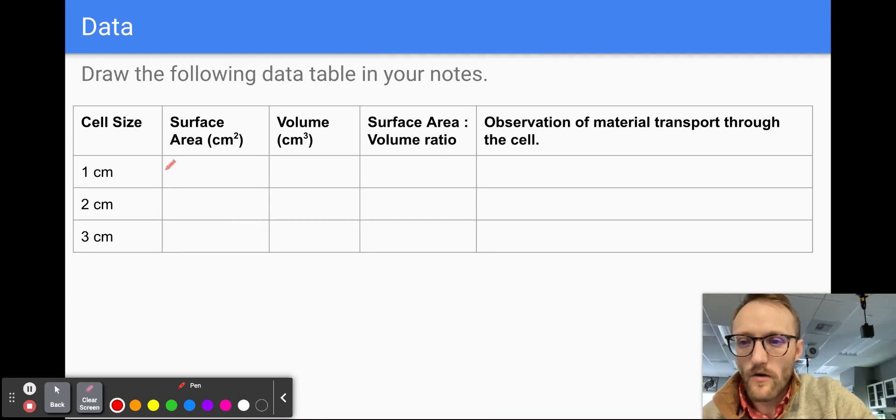So when we do this in our data table, I can use this pen here. We know that the base of our one centimeter cube is going to be one. And we're going to multiply that by one, which is the height. And then we're going to multiply that by the number of sides, which is six. So those math wizards out there, one times one is still one. And then one times six is going to give us a surface area of six centimeters squared.